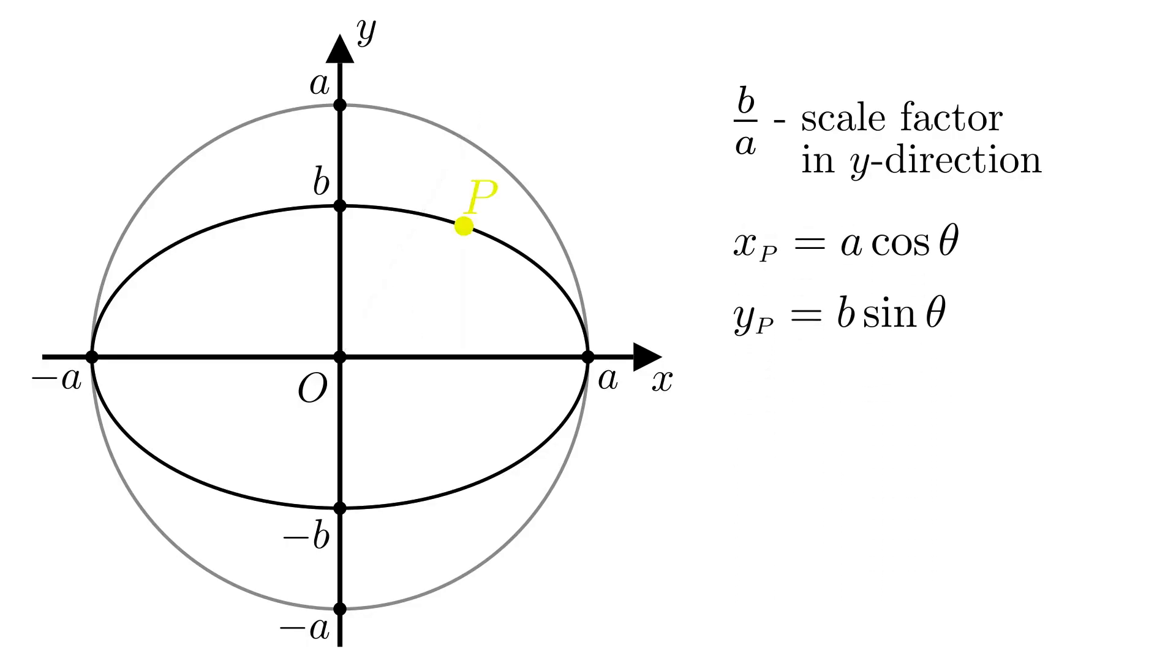Since p can be anywhere on the ellipse, then coordinates of any point on the ellipse can be expressed as a times the cosine of theta and b times the sine of theta.